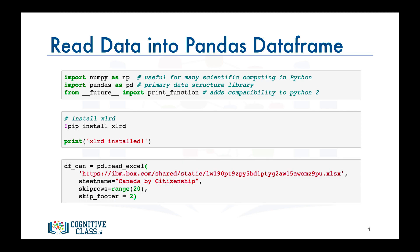Then we call the pandas function read_excel to read the data into a pandas data frame, and let's name this data frame df_can. Notice how we're skipping the first 20 rows to read only the data corresponding to each country.